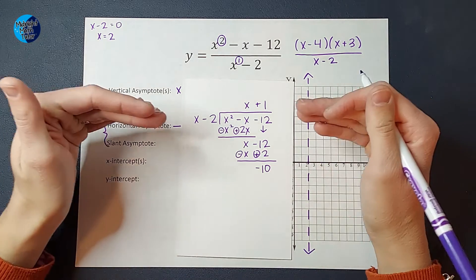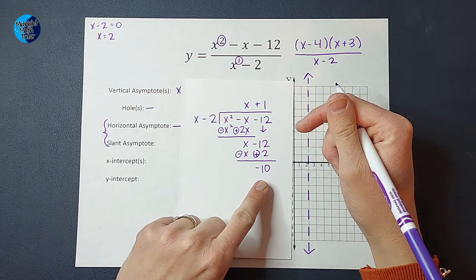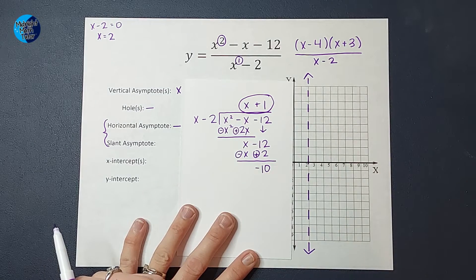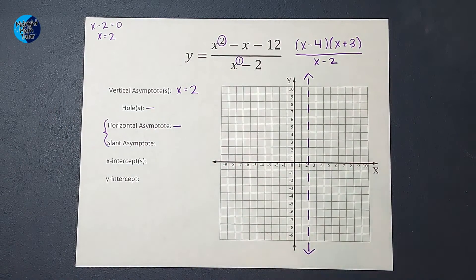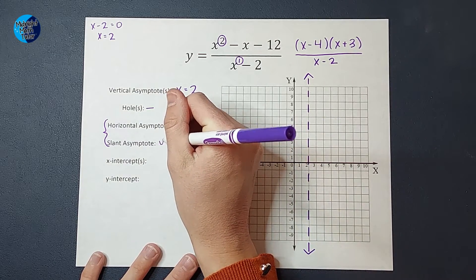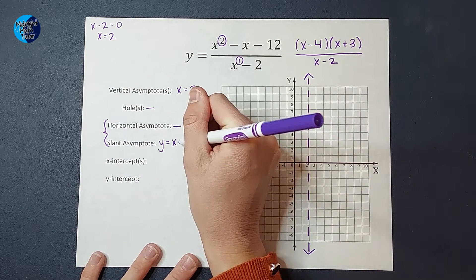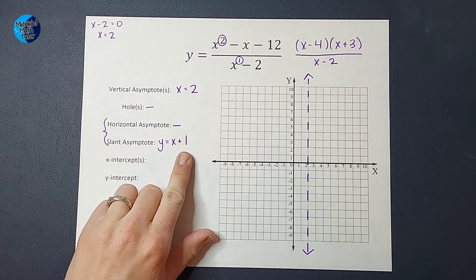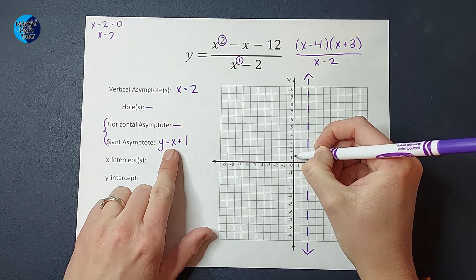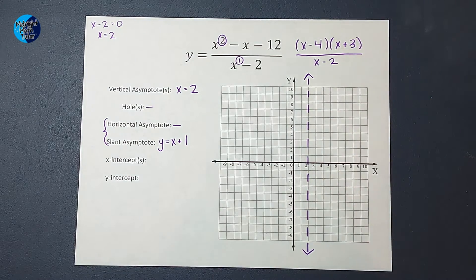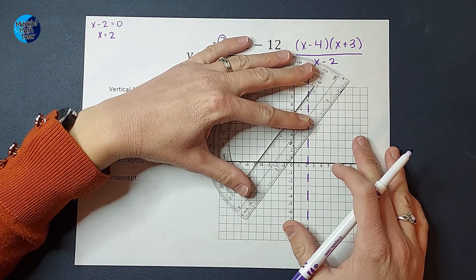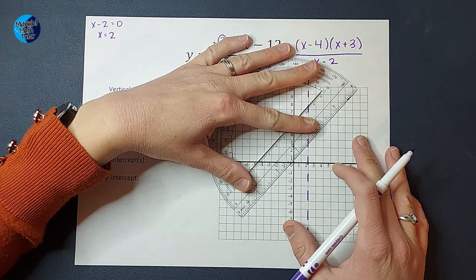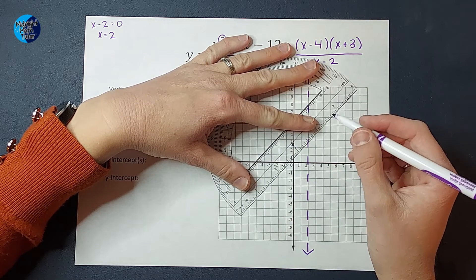When figuring out my slant asymptote I do the long division and I don't need to worry about the remainder. So my slant asymptote is y equals x plus 1. Going back to our graphing line knowledge, this means my y-intercept is at 1 and my slope is 1 over 1. I'm going to represent this with a dotted line on the graph.